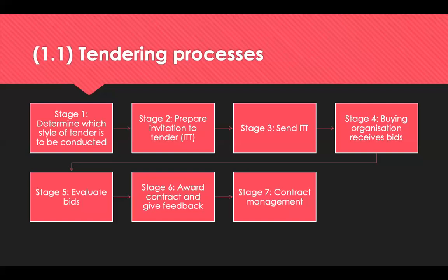Stage six: award the contract and give feedback. Offer the contract to the winning supplier via formal communication such as a letter or email. The winning supplier does not have to accept, so it's good practice to await their response before notifying unsuccessful bidders. Stage seven is contract management — ongoing evaluation of the supplier's performance against the criteria issued in the ITT, ensuring risk is reduced by identifying defects or performance issues at an early stage.